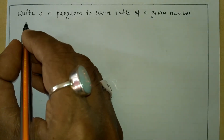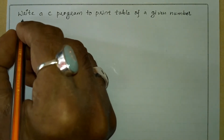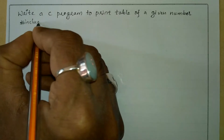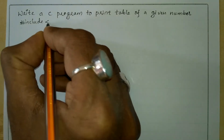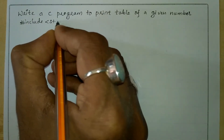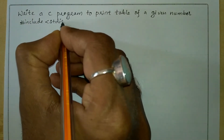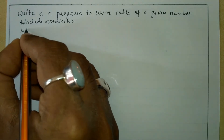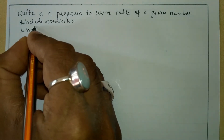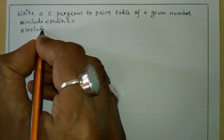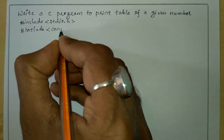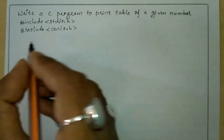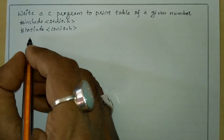Let us write the preprocessor directives: hash include in angle brackets we write standard input output dot h header file. The next preprocessor directive is hash include in angle brackets we write console input output dot h header file.